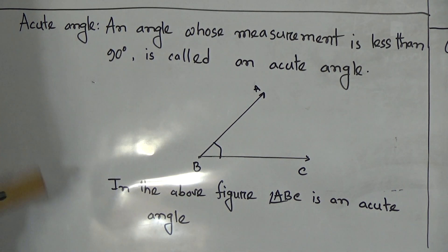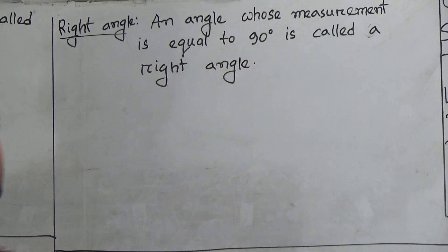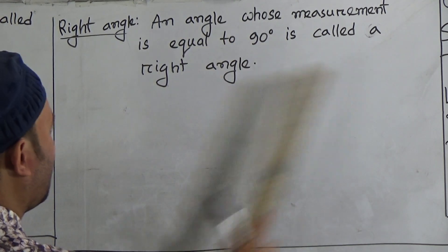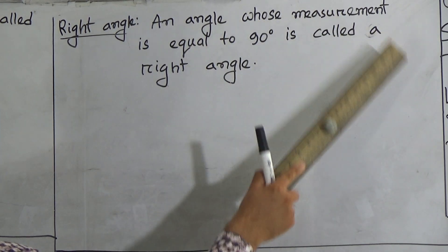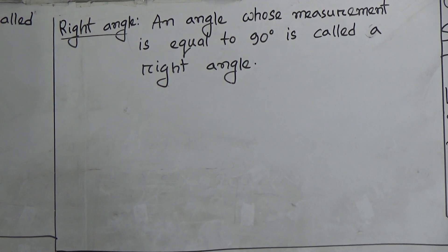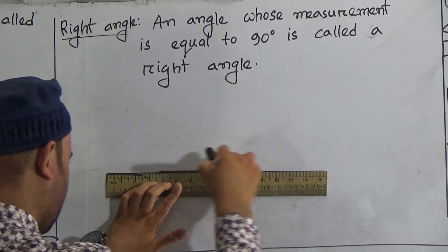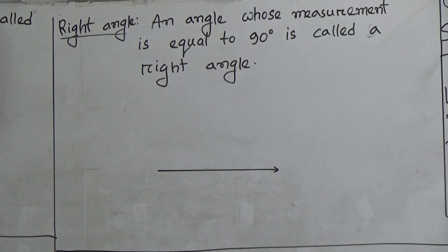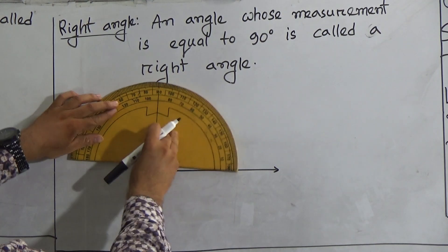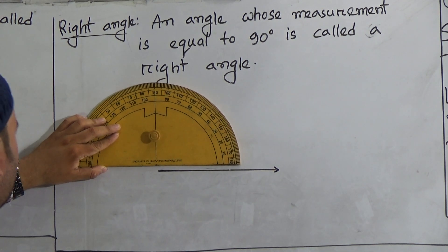Now the next one is right angle. An angle whose measurement is equal to 90 degrees is called a right angle. First of all you have to draw a ray. Now to draw a right angle you have to use the protractor — this shape is called a protractor — so you have to use this protractor to draw a right angle.